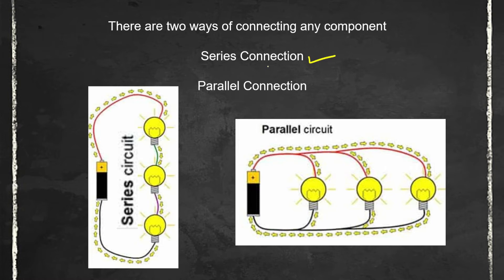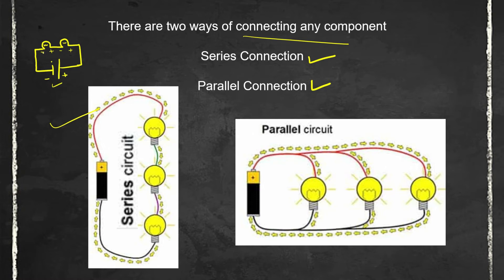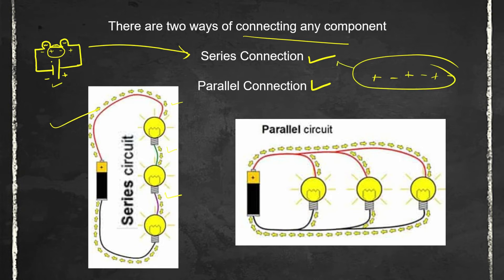The word 'system' refers to the two ways of connecting any component. From your previous classes, you may have studied that components can be connected in series or in parallel. In a series connection, as shown in this diagram, we connect a battery and then a bulb — and if we connect another component by joining different poles (positive to negative), that arrangement is known as a series connection. The pattern is: positive, negative, positive, negative — alternating like this.